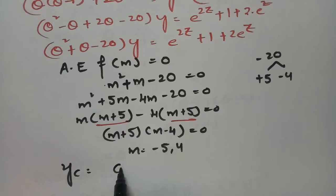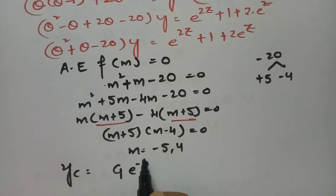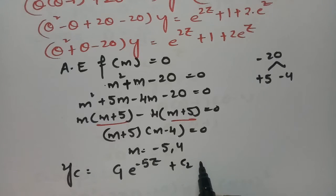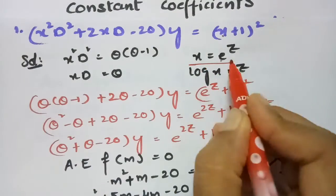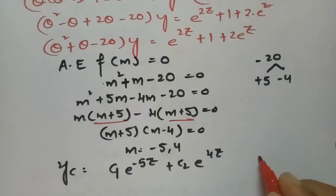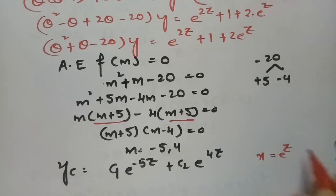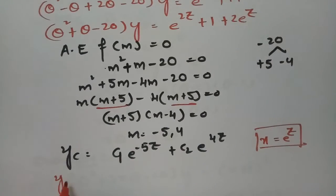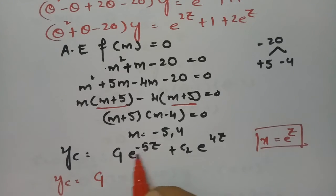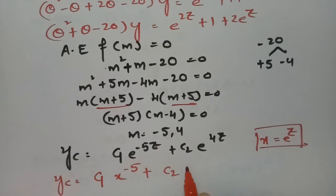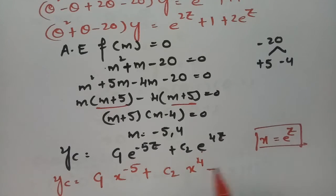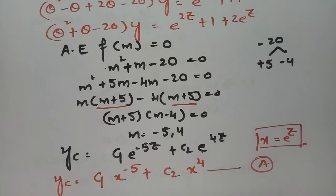Therefore, yc = c1·e^(−5z) + c2·e^(4z). Since x = e^z, replacing back: yc = c1·x^(−5) + c2·x^4. This is the complementary factor.